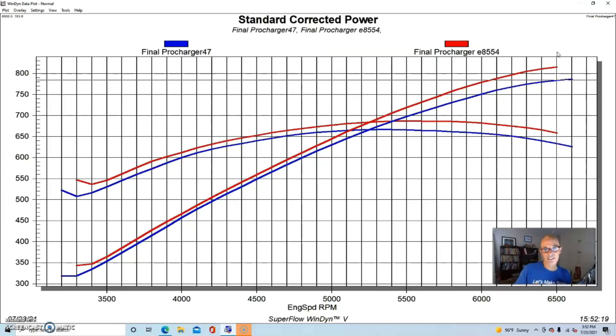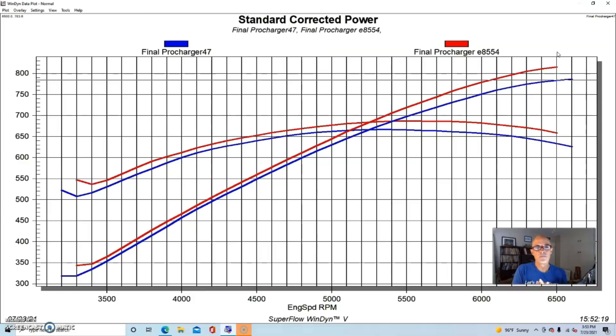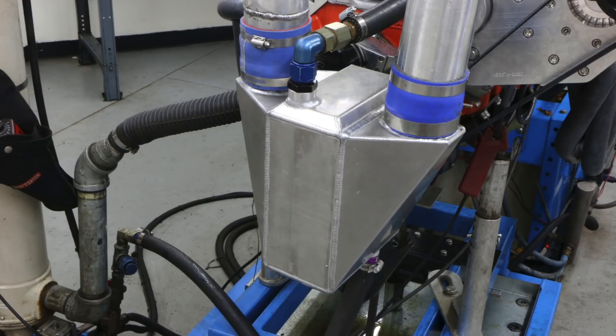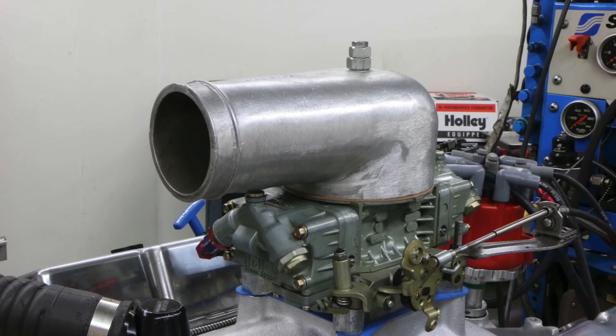The two things that this combination had that the 671 did not—one, it had a more efficient supercharger. Even though we were running more boost than 11.5 pounds on the 671, the ProCharger is more efficient than the 671, so the discharge temperature relatively speaking is going to be lower. But what really helped this thing out is that we ran an air-to-water intercooler on the ProCharger, so we already had a fairly cool charge temperature going into the motor. So the E85 didn't bring that down as much as it probably did on the 671. We did get gains—like I said, 30 horsepower on this ProCharged 383—but the gains are not quite as good as they were on the 671.